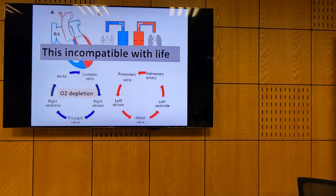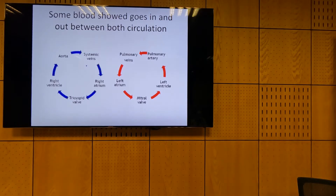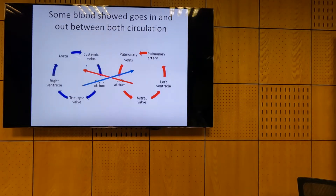Nobody will present with this absolute parallel circulation. To have a baby with TGA that's still alive, we should have some blood going between the circulations. The aorta should receive some oxygenated blood, and the pulmonary artery should receive some deoxygenated blood to give it some oxygen. So some blood goes from the pulmonary circulation to the aorta and vice versa — what you previously called a shunt.